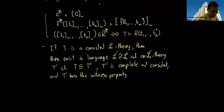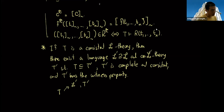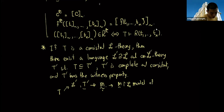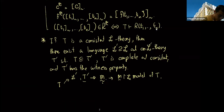If we can show this, it means that when you have T, you can extend both the language to L' and the theory to T' so that it is complete and consistent. Then apply the previous part to construct a model M of T'. If you take the reduct of M back to the original language L, you get a model of T.